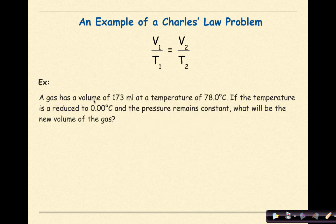So let's look at our example. A gas has a volume of 173 milliliters at a temperature of 78 degrees Celsius. If the temperature is reduced to 0 degrees Celsius and the pressure remains constant, what will be the new volume of the gas?